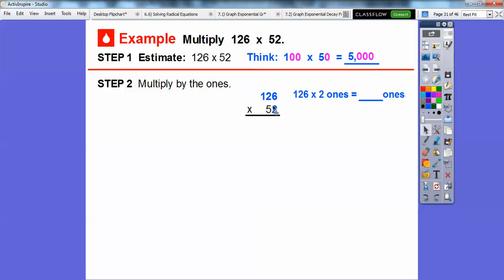Let's multiply the ones. So 126 times 2 ones right there. So if we go ahead and multiply, we get 252. So 2 times 6 is 12. So 12 ones, we carry the, regroup the 10 right there, the 1 ten. And then we do 2 times 2 is 4, plus this additional 10 is 5. And then 2 times 1 is 2 right there. So we get 252 when we multiply 126 times 2.